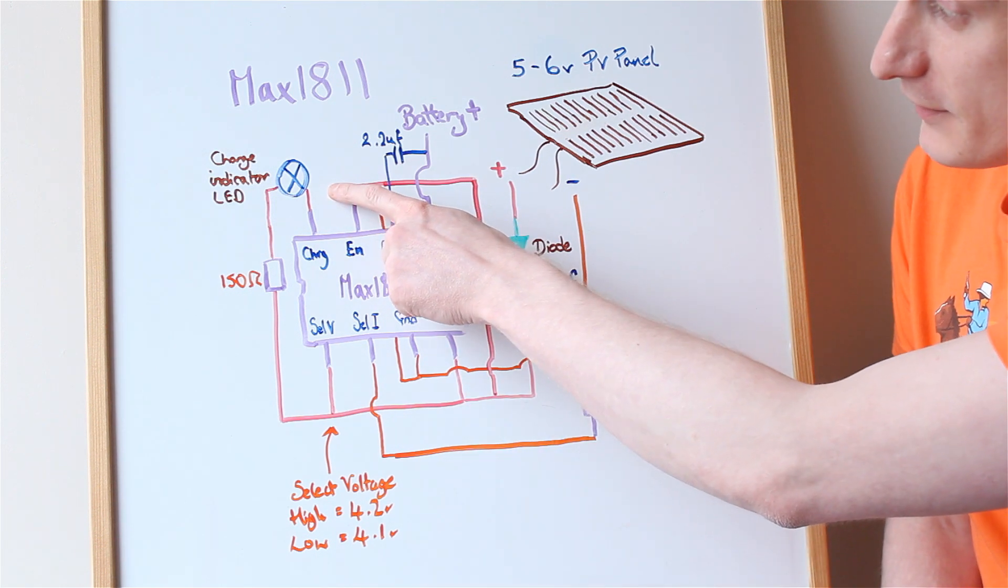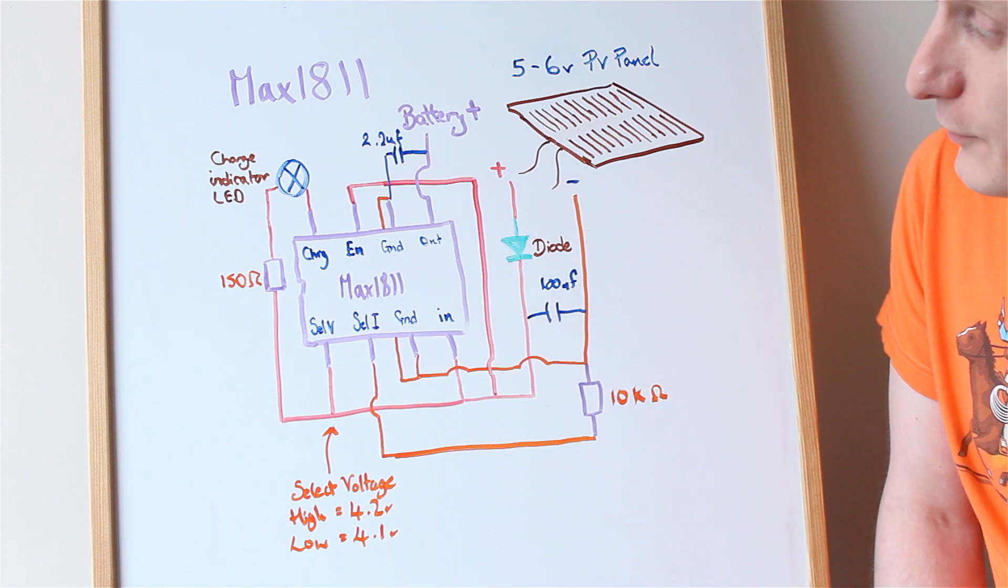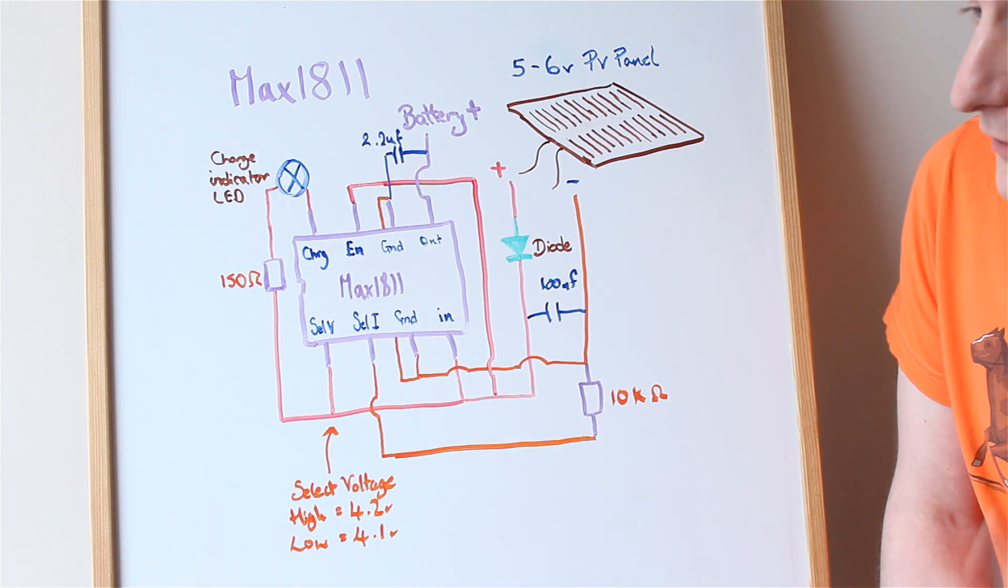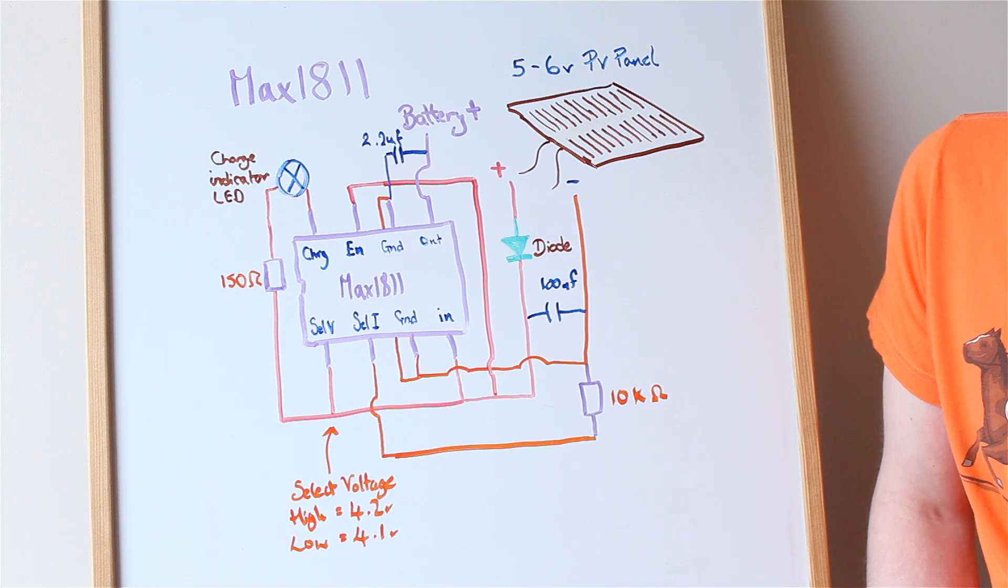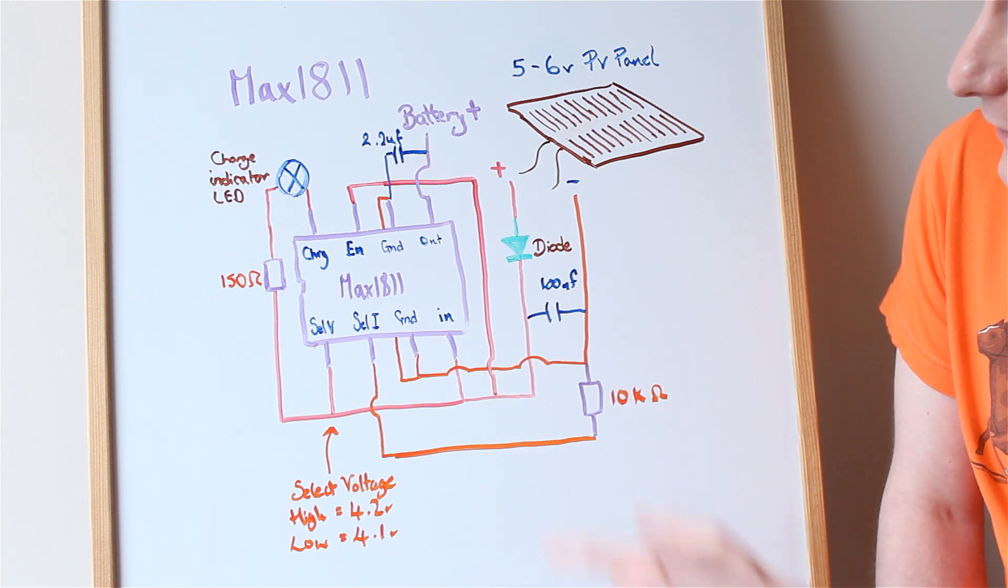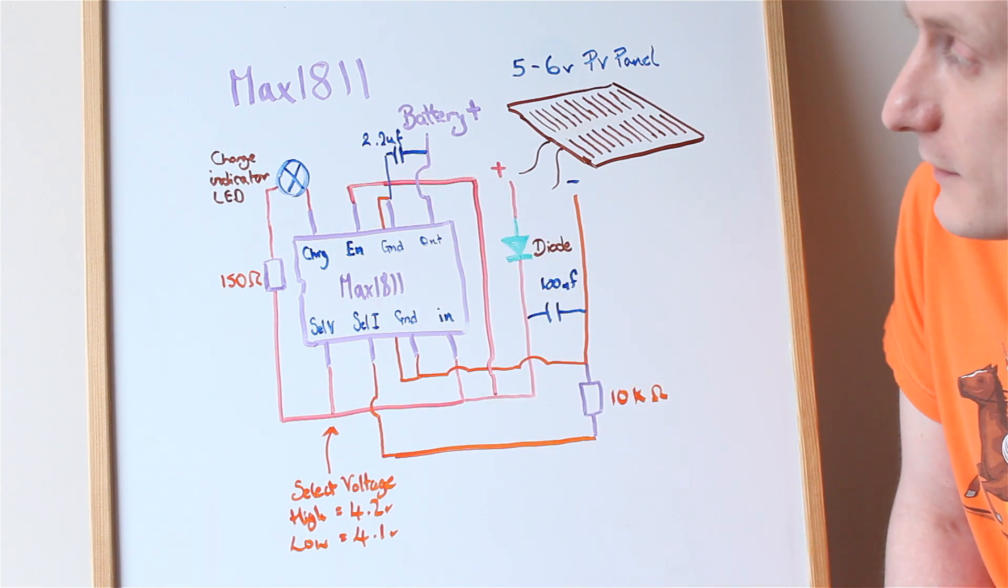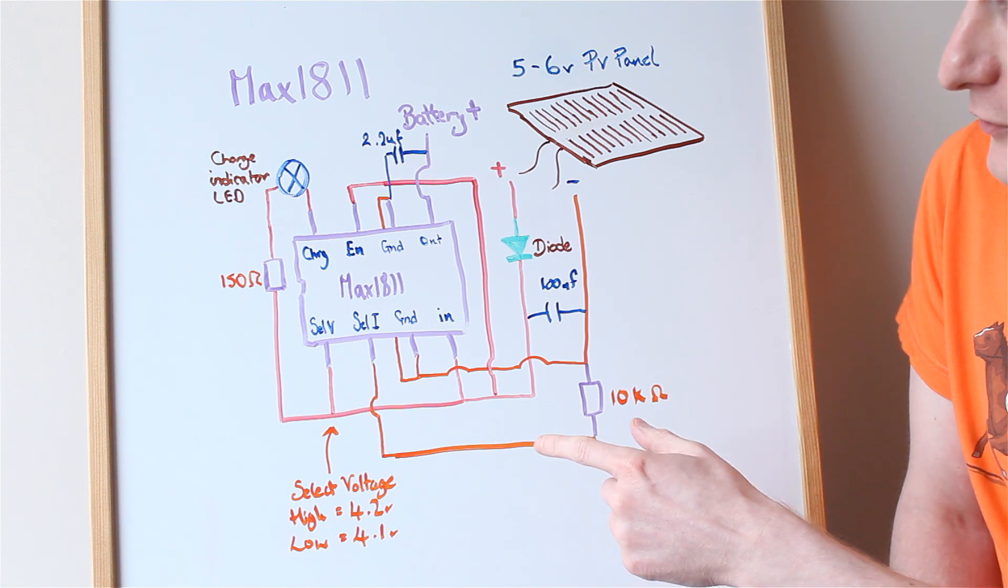It has a charge indicator, a little LED up here, that's connected to IN, so when it's got current going through, and the current's enough to mean the chip's operating, then the charge indicator LED will light up. And similarly, when the battery's fully charged, that charge indicator will go off.